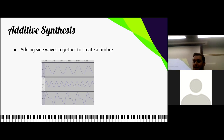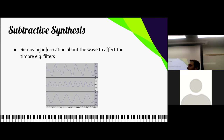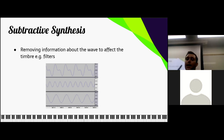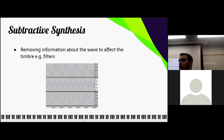Then there's subtractive synthesis — the opposite. It's removing information about a wave to affect the timbre. For example, using a filter: we have an original wave and we remove certain frequencies from it, ending up with a simpler wave. Just like with additive synthesis where you can add sine waves infinitely to create any sound, you can do the same with subtractive synthesis — remove as many sine waves as you want from any wave to get any wave that you want.